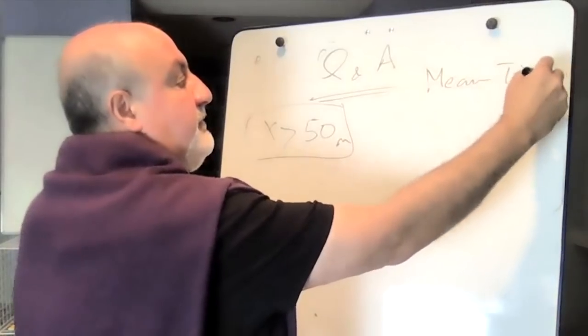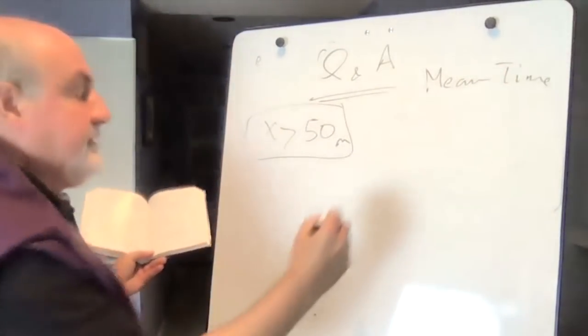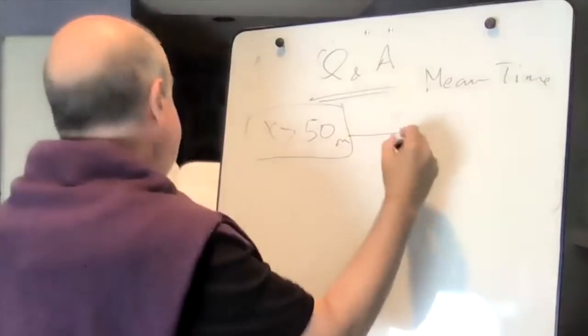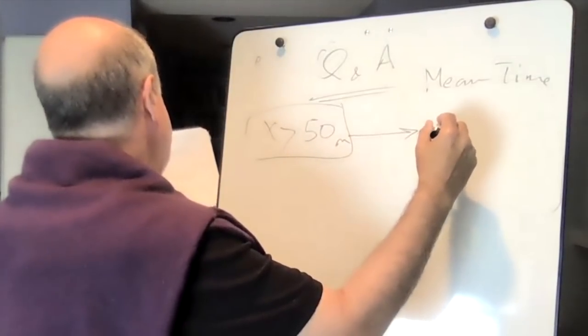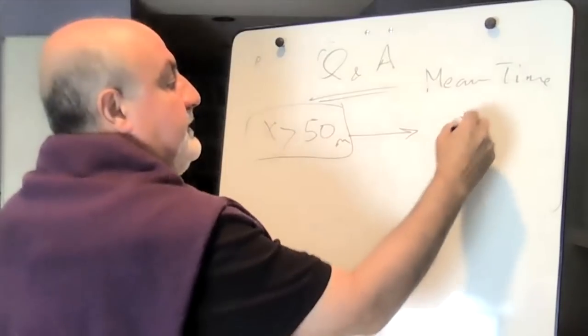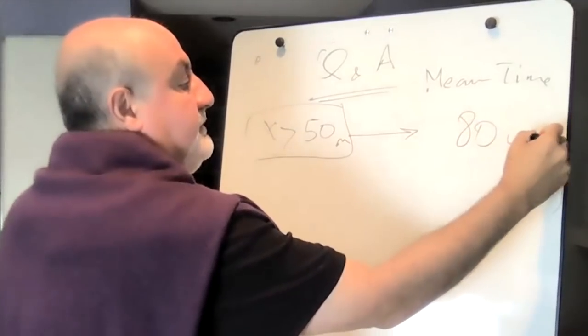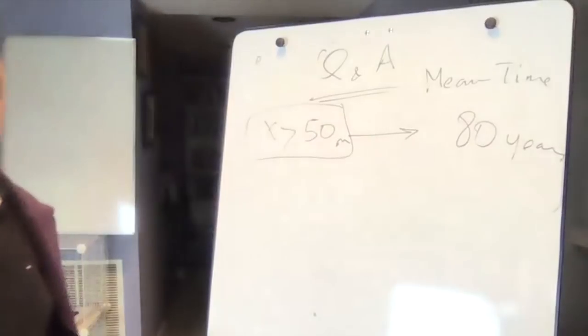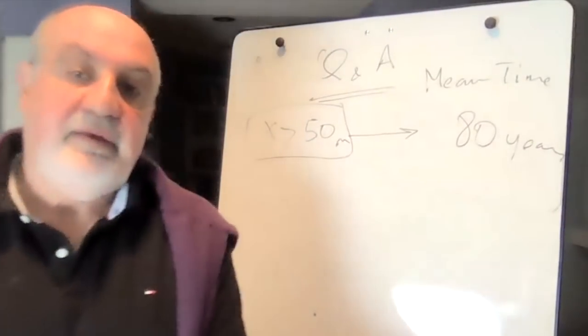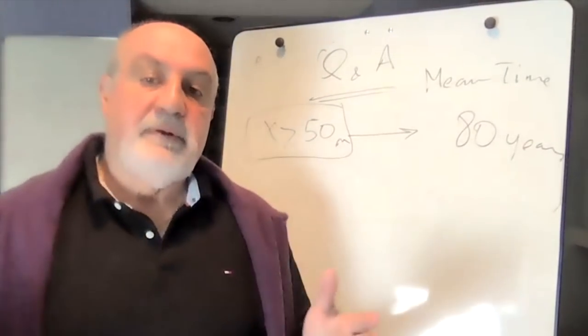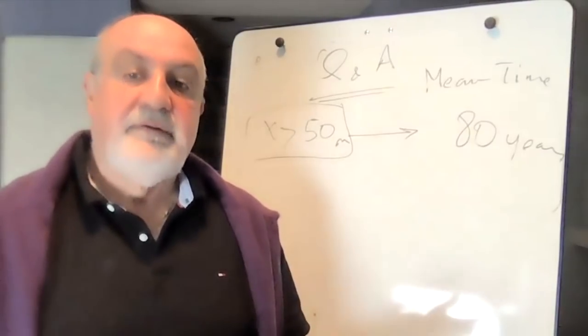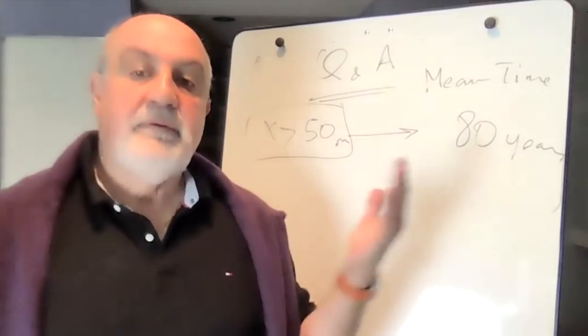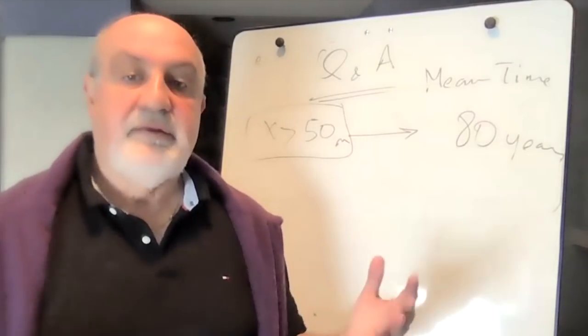The mean time for it to happen throughout history—effectively for X higher than 50 million, the mean time is something like 80 years. So if it takes 80 years on average for such an event to happen, how can you make claims 70 years later that the world is a better place?